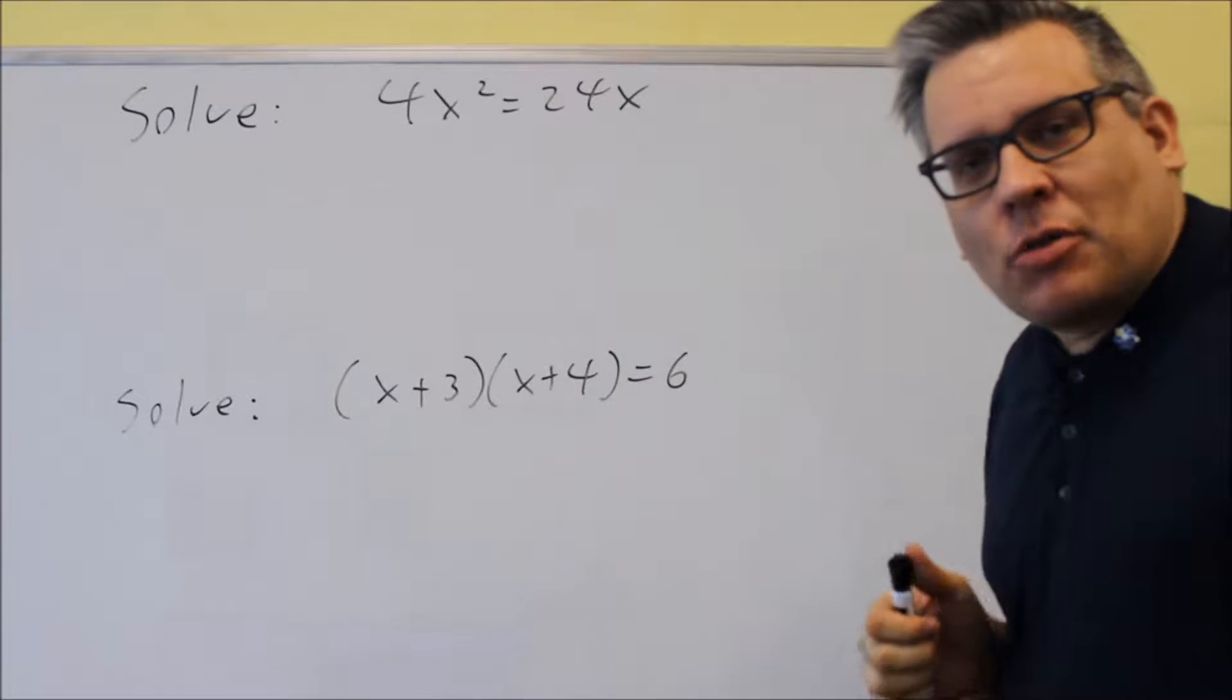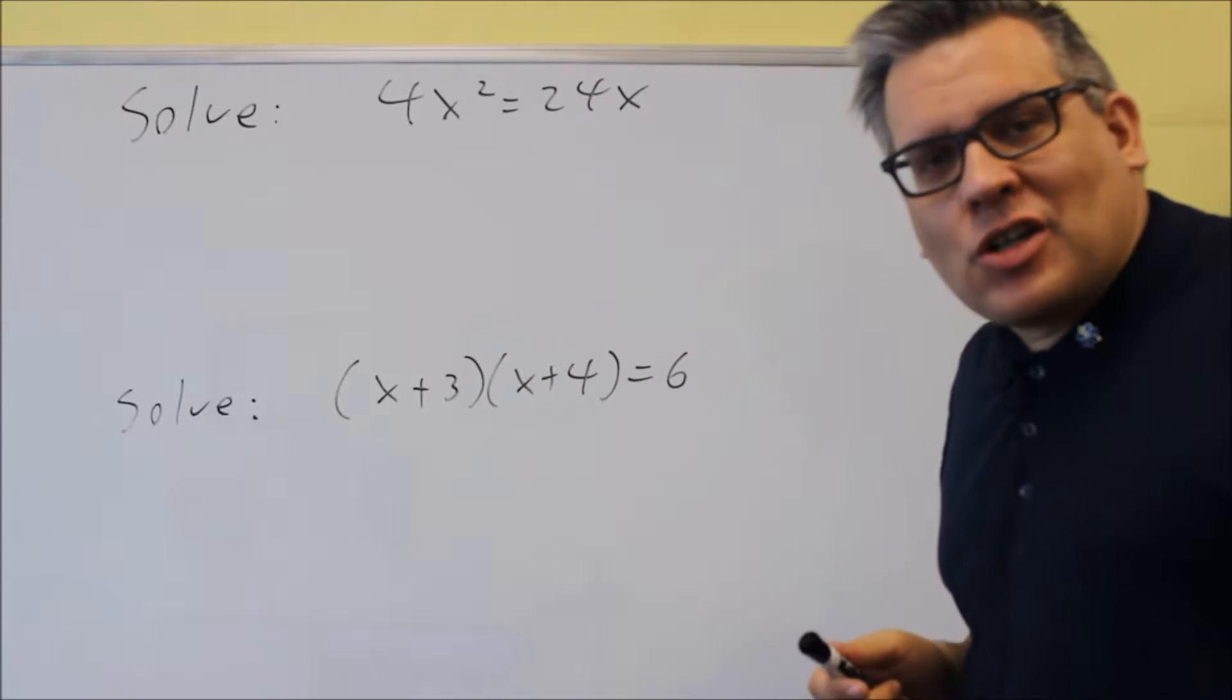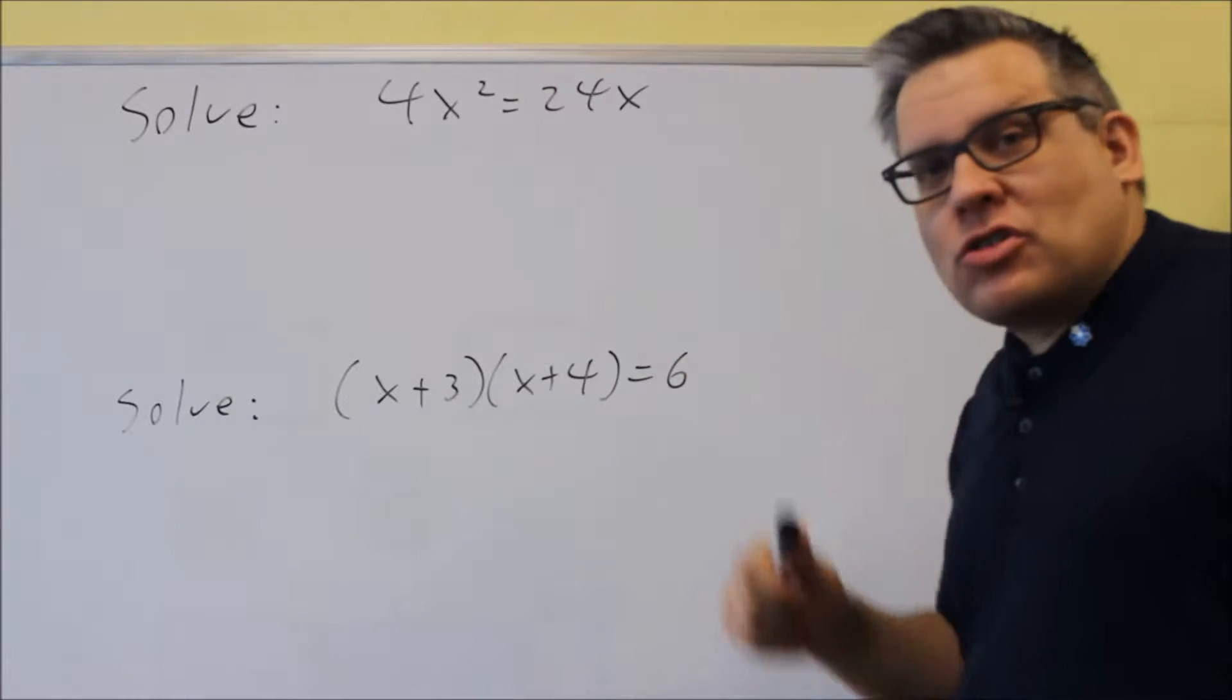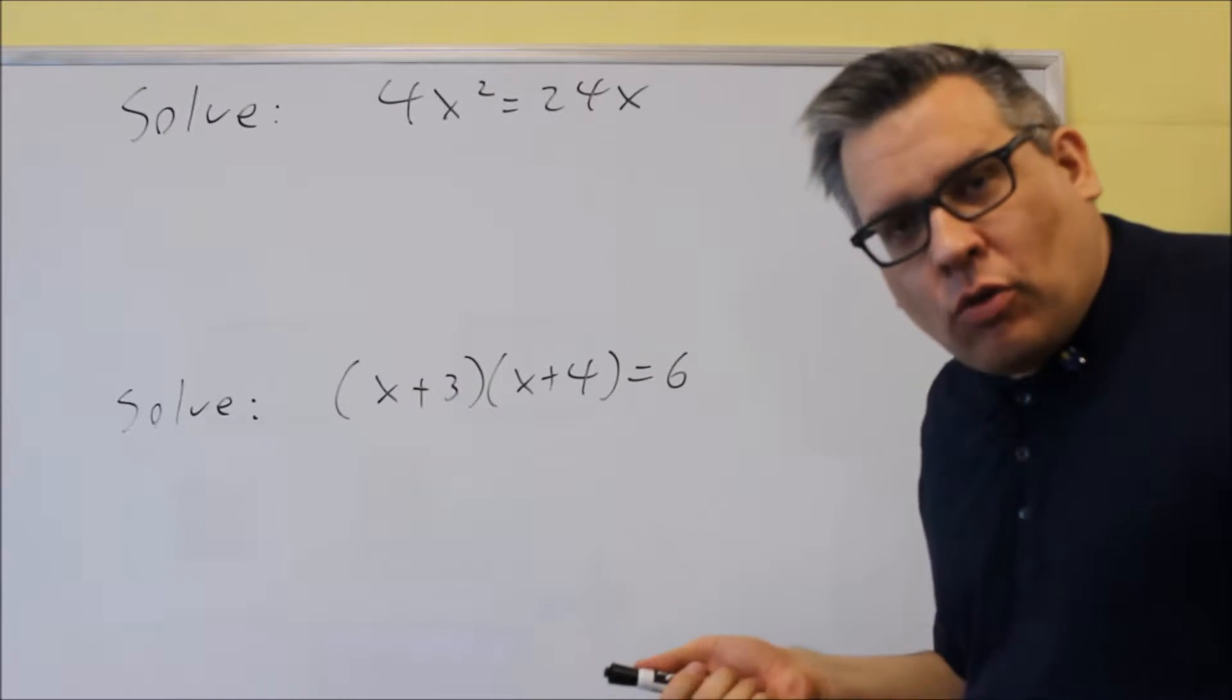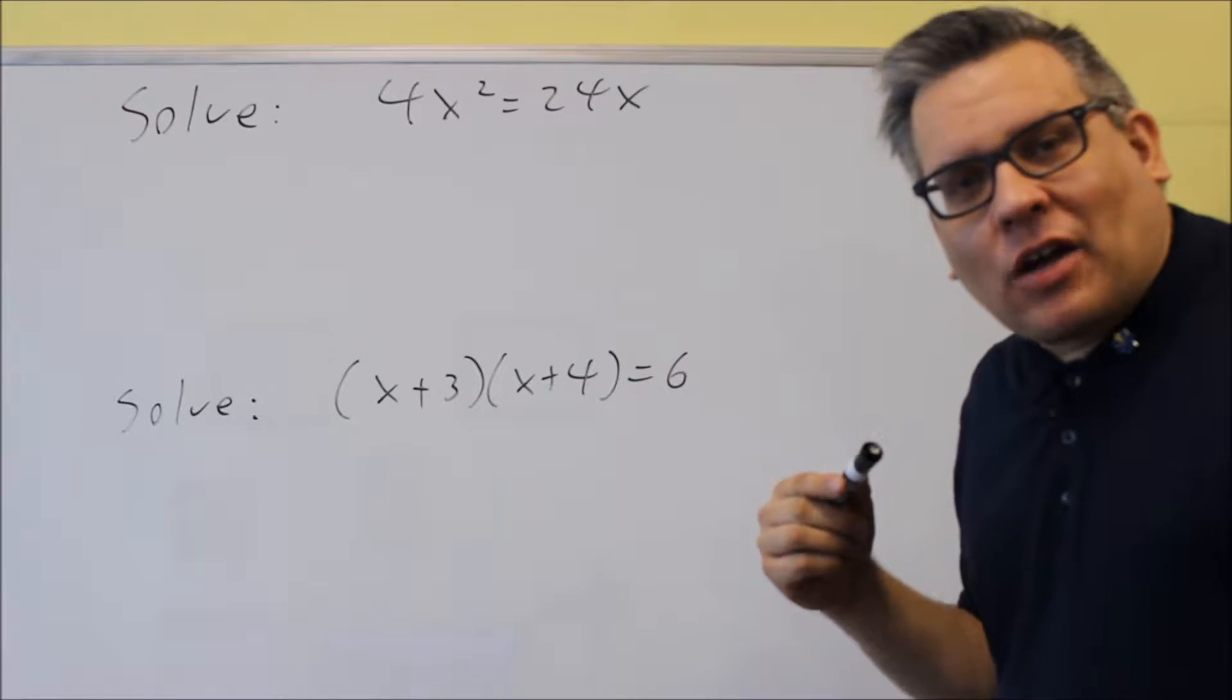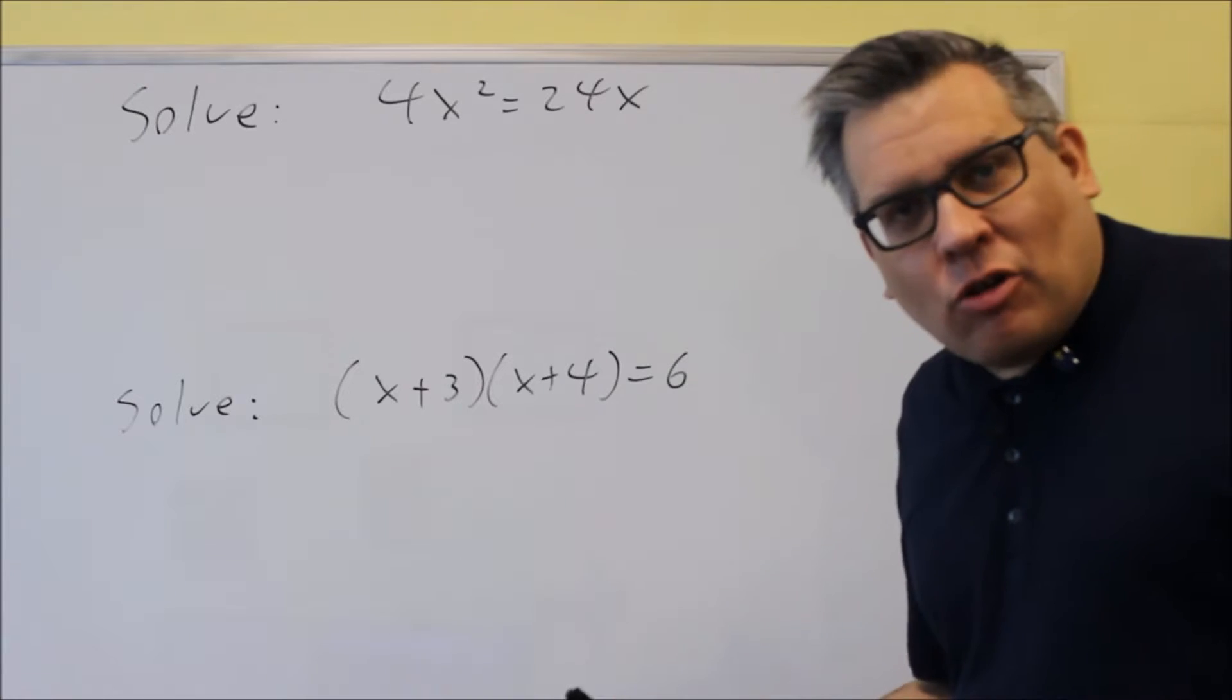So for solving problems like this, the most common mistake that I see people making is people will divide both sides by x. Now if you do that, what's going to happen is you're not going to get one of the correct answers. You may get one answer, but you may not get the other one. The other reason why you don't want to do that is because if you divide by x, what if x was zero, then there's a chance that you might be dividing by zero, which is undefined.